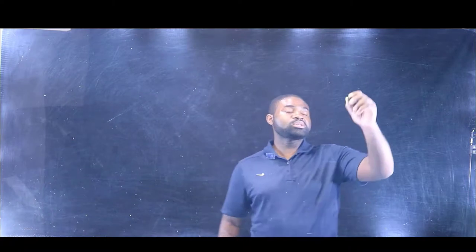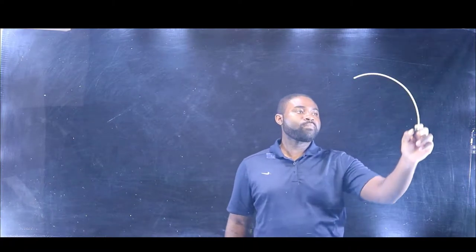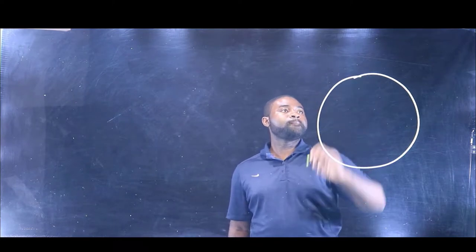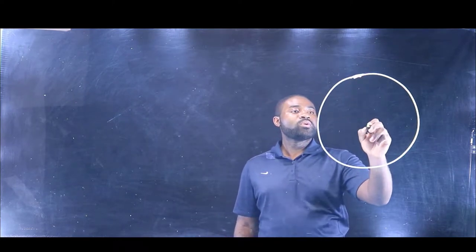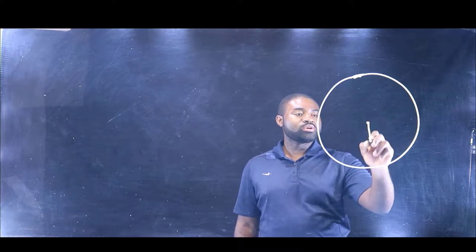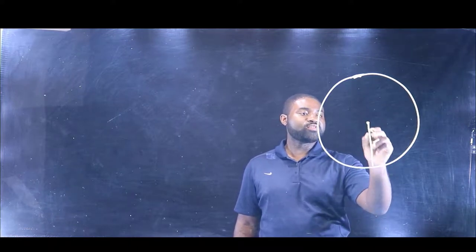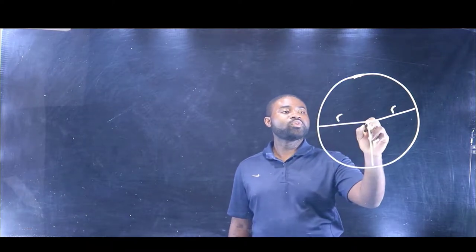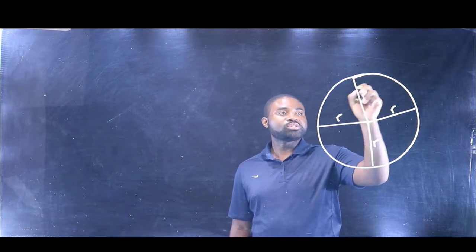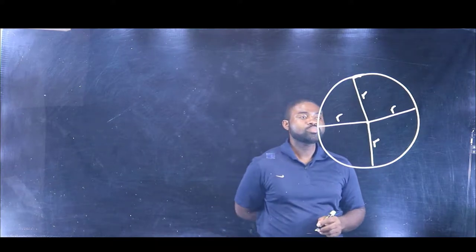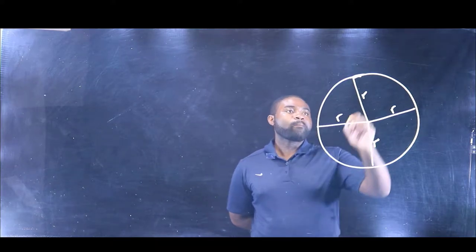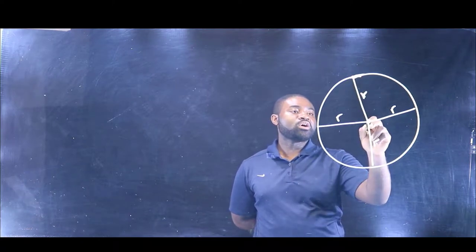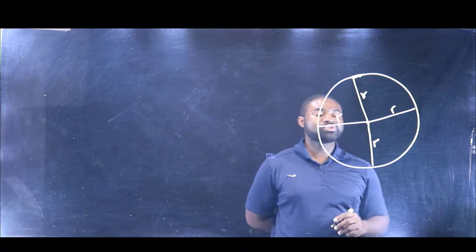Let's consider a circular track. It's circular because the radius is the same all along — the radius does not change. As long as the vehicle, or the object, is free to move along this circular track.